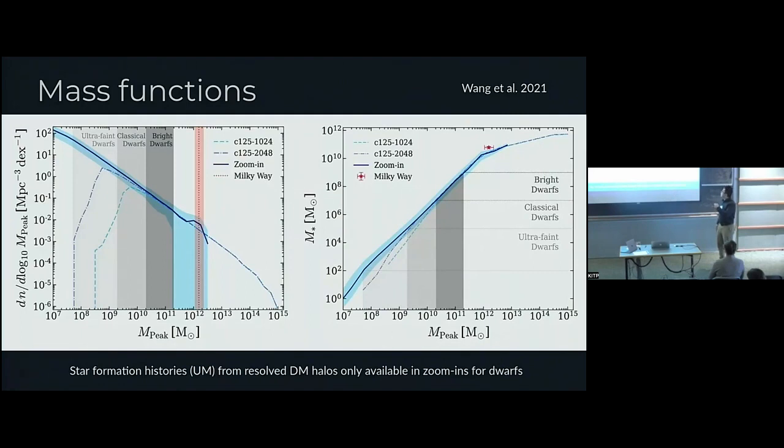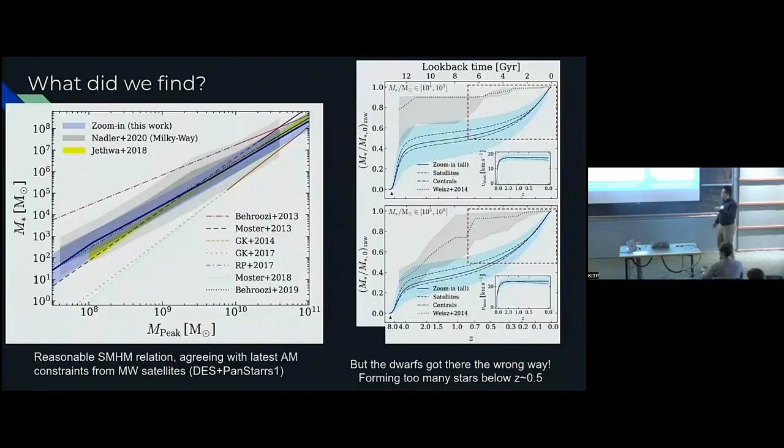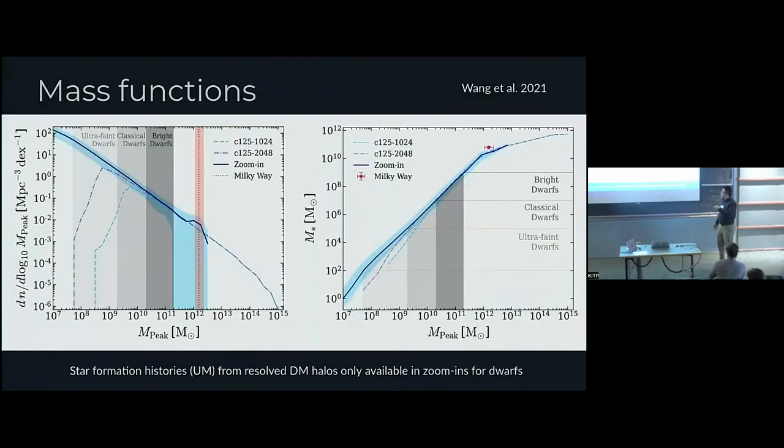For the ultrafaint dwarfs that goes down to like 100 solar masses, all the cosmological sims reach their resolution limit if you want to probe this regime. So you need this multi resolution framework.